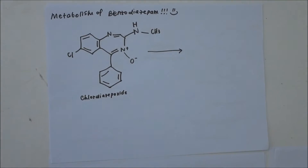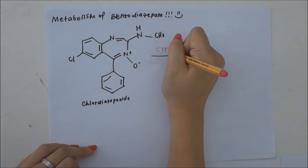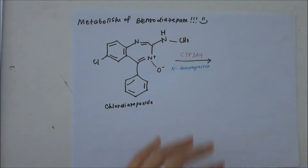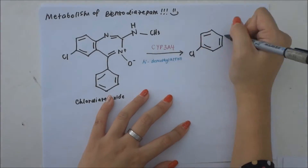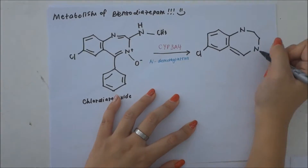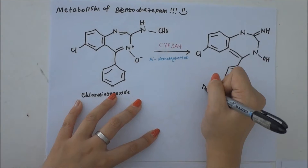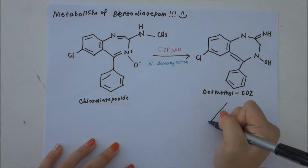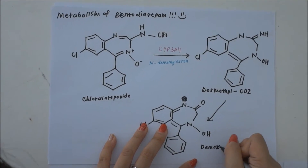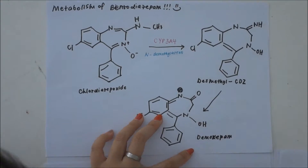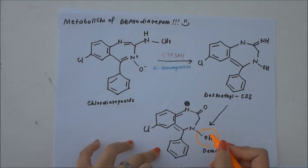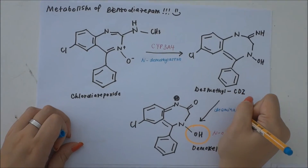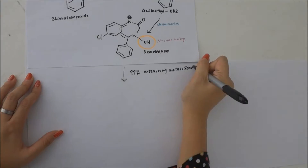Chlordiazepoxide undergoes N-demethylation to produce N-desmethylchlordiazepoxide in the liver by CYP3A4. It then undergoes deamination to form demoxepam by the removal of the N-oxide moiety. 31% of demoxepam are excreted in the urine.